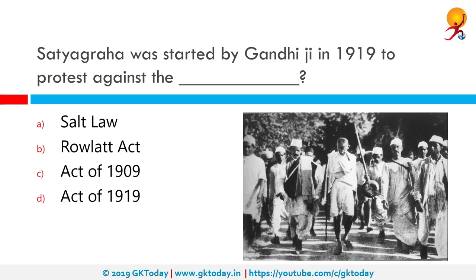Satyagraha was started by Gandhiji in 1919 to protest against what? The correct answer is the Rowlatt Act. In 1919, Gandhiji gave a call for Satyagraha against the Rowlatt Act passed by the British. The act restricted the freedom of expression and strengthened police powers. Mahatma Gandhi along with other leaders strongly opposed this act.